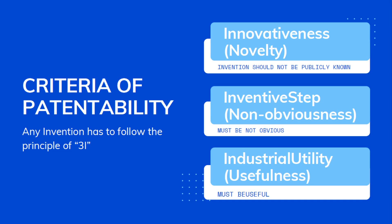What are the criteria of patentability? Any invention has to follow the principle of 3i. Here, 3i means innovativeness, inventive step, and industrial utility. Innovativeness means novelty — the invention should not be publicly known. Inventive step is also called non-obviousness, meaning the invention must not be obvious. Industrial utility means usefulness — the invention must be useful.